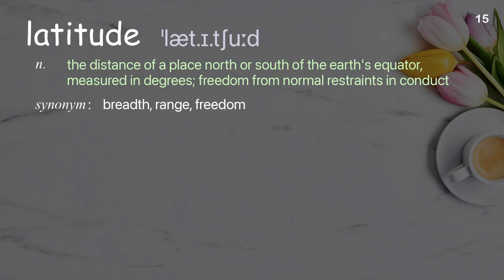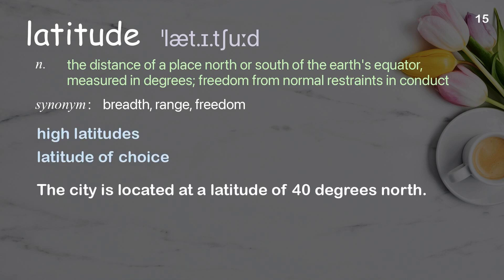Latitude: The distance of a place north or south of the Earth's equator, measured in degrees; freedom from normal restraints in conduct. Examples: High latitudes. Latitude of choice. The city is located at a latitude of 40 degrees north.